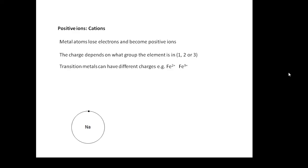Transition metals can have different charges. Iron, for example, is a transition metal in this middle bit of the periodic table, and it can be Fe2+ or Fe3+.